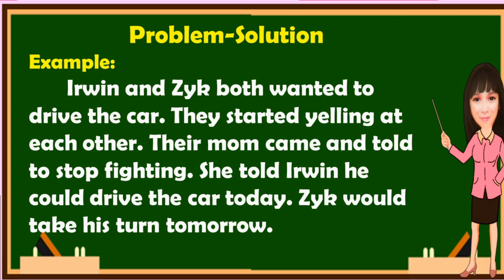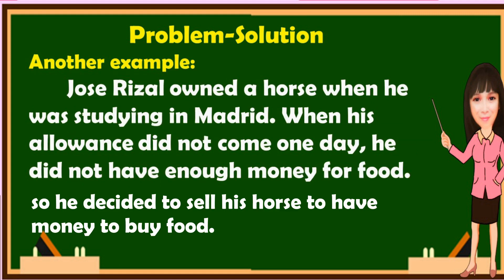So, what's the problem in the paragraph? The problem is that Irwin and Zike both wanted to drive the car, so they started yelling. The solution is that Irwin could drive the car today and Zike would take his turn tomorrow. Here is another example: Jose Rizal owned a horse when he was studying in Madrid. When his allowance did not come one day, he did not have enough money for food. So he decided to sell his horse to have money to buy food. The problem here is that Jose Rizal did not have enough money, and the solution is to sell his horse to buy food.